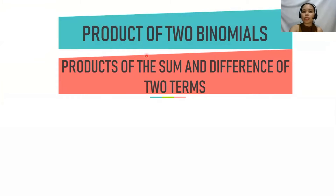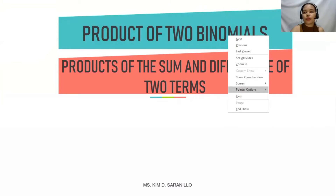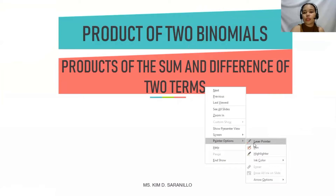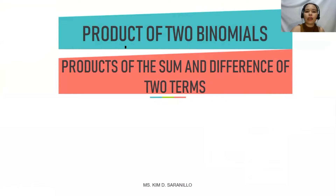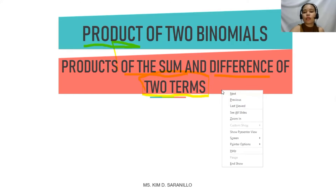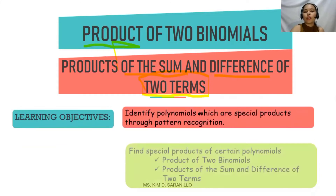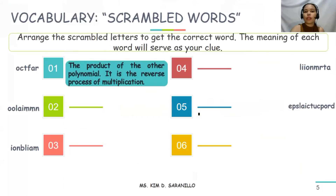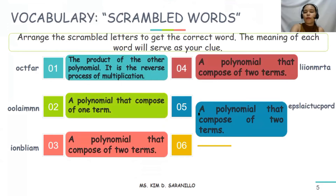We will discuss the product of two binomials — products of the sum and difference of two binomials. You can also use the highlighter to highlight topics, for example 'products of the sum and difference.' You can tell your students to read a specific part. So there is highlighter, laser, and of course pen — it depends on what you want to use. That's the beauty of Zoom app. You can just click next.